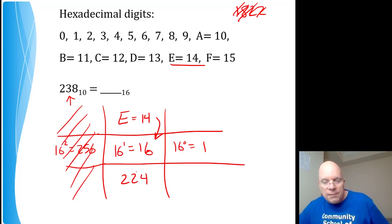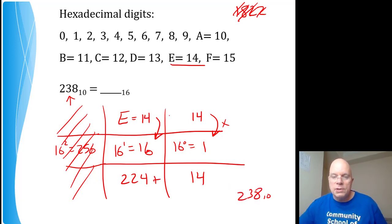And that means I'm 14 away from my goal, 238, so I must also need 14 ones. 224 plus 14 is 238. So if I need 14 ones, I also need E ones. I need E ones and E sixteens, which means that the base 10 value 238 in hexadecimal is EE. That's hexadecimal.